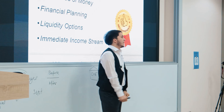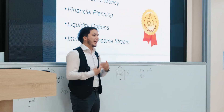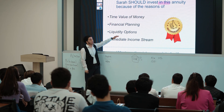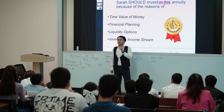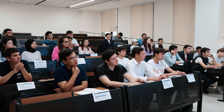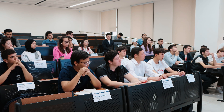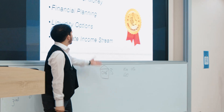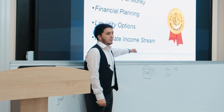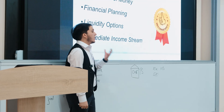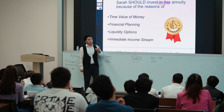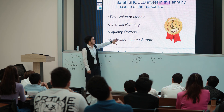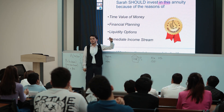A third advantage is liquidity options — annuities are flexible. In an emergency, Sarah could withdraw more than $1,000 in a given month, say $3,000, and the plan adjusts accordingly. A fourth advantage is the immediate income stream: at 65, Sarah can no longer work, so as her main source of income an annuity could be the ideal solution.